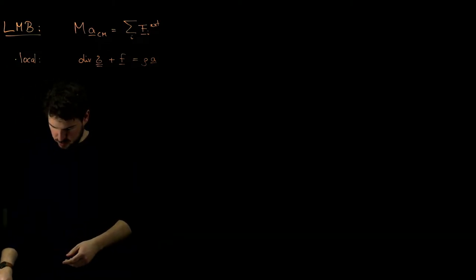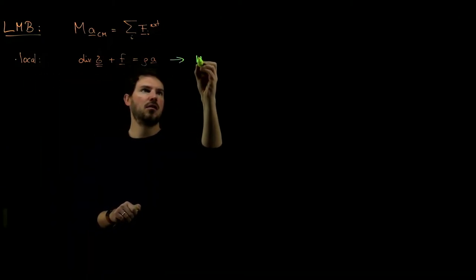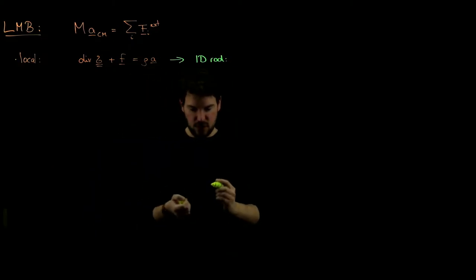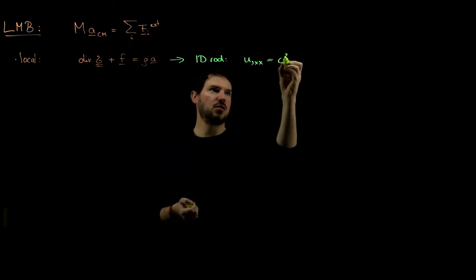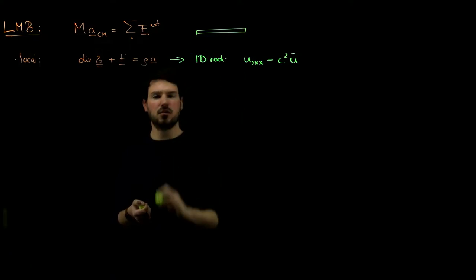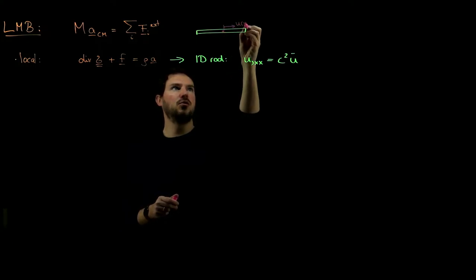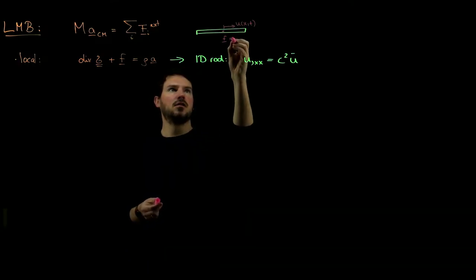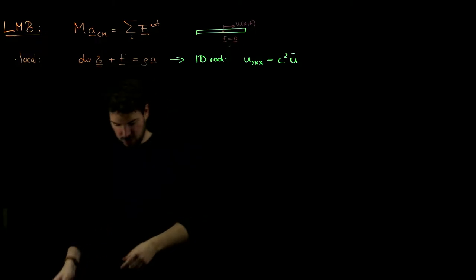And in particular, what we have then discussed is how we can reduce this to a 1D section. If we look at a 1D rod, this simplifies tremendously, and it simplifies to the wave equation, which we know as the second derivative of u with respect to position equals c squared times u double dot. This is the 1D wave equation that we arrive at in this particular scenario.